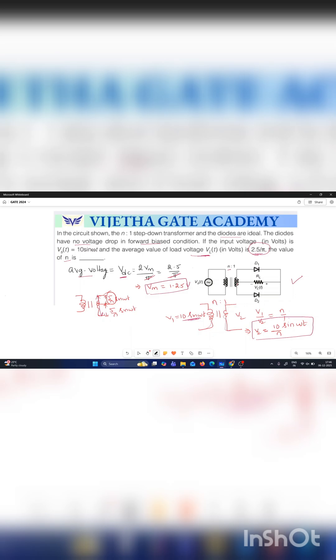But here the given transformer is center tap transformer. So 5 by n sin omega t is developed across upper half and 5 by n sin omega t is the voltage developed across the lower half of the secondary winding. While solving the full wave rectifier in the derivations, Vm is the voltage across the upper half or lower half. We will consider only one.